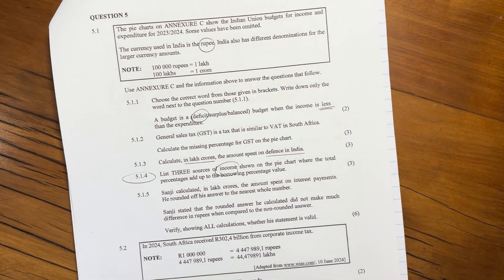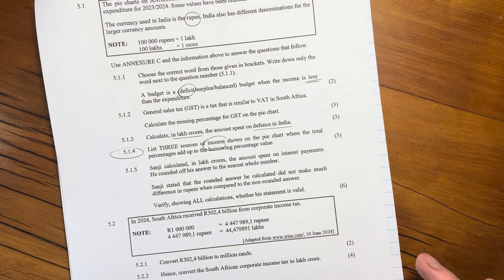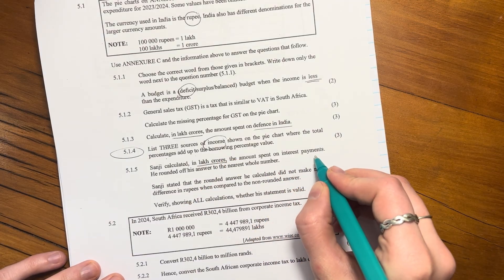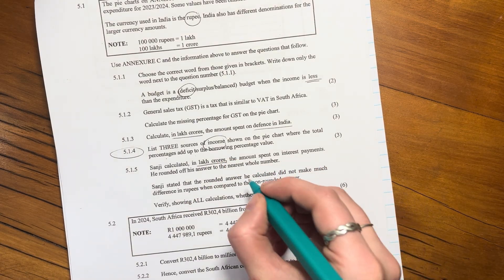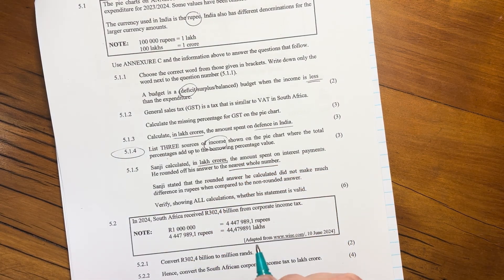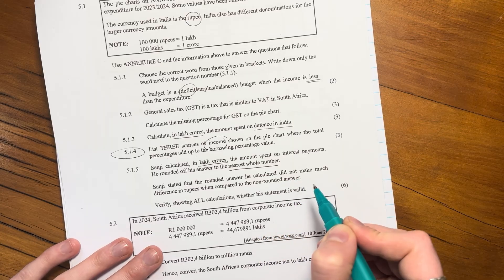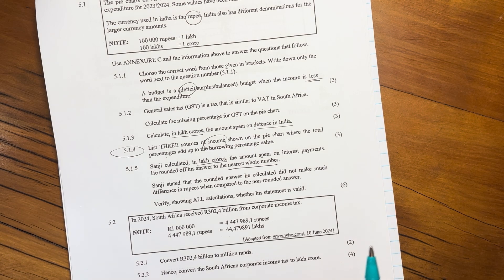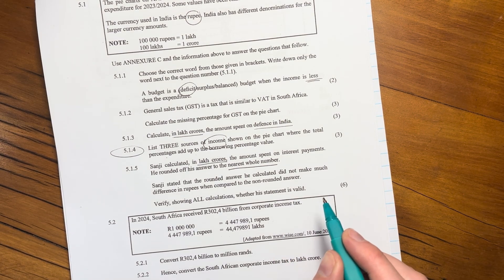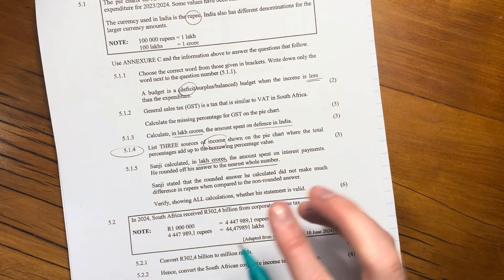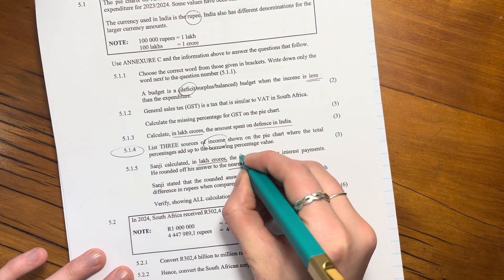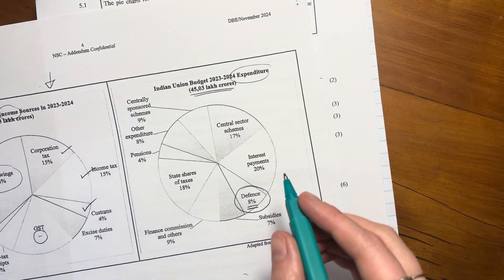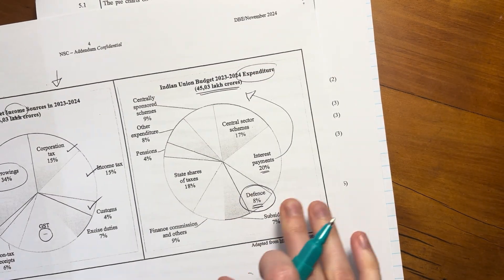Let's move on to the last question for this video. It is a six marks question. So we're going to have to kind of apply ourselves a little bit more. Sanji calculated in lakh crore the amount spent on interest payments. He rounded off his answer to the nearest whole number. So not even two decimal places, whole number. Sanji stated that the rounded answer he calculated did not make much difference in the rupees when compared to the non-rounded answer. Verify showing your calculations whether his statement is valid. So first of all, we have to, before we do anything with rounding, we actually have to define the amount spent on interest payments.